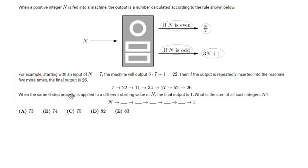When the same six-step process is applied to a different starting value of n, the final output is 1. What is the sum of all such integers n?